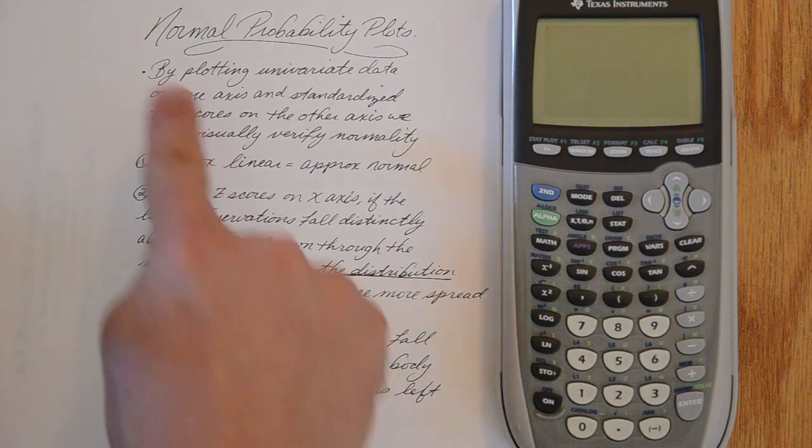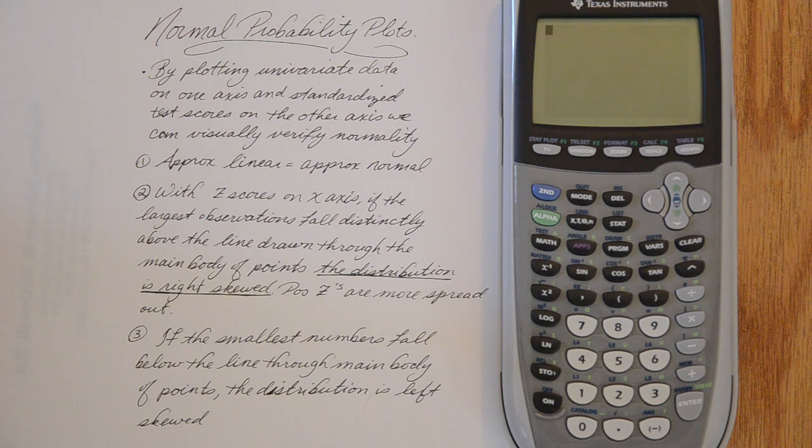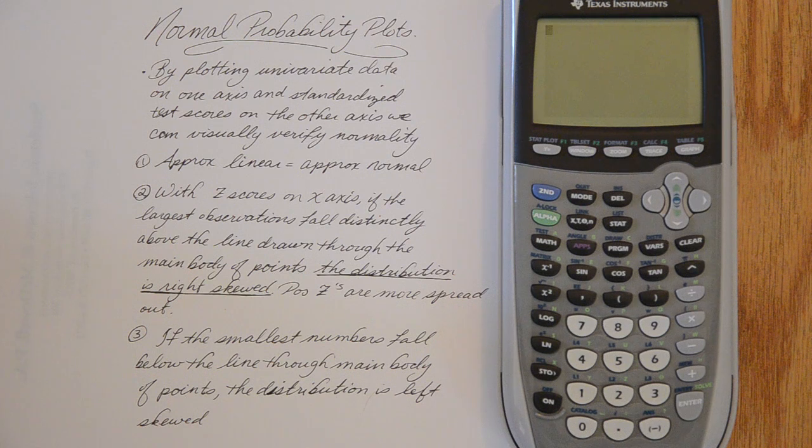So what we have instead is something called the normal probability plot. It will graph the univariate data that you have on one axis and the standardized test statistic on the other axis. And at this point our textbook is using just z-scores for that standard test statistic. So let's see what that looks like.